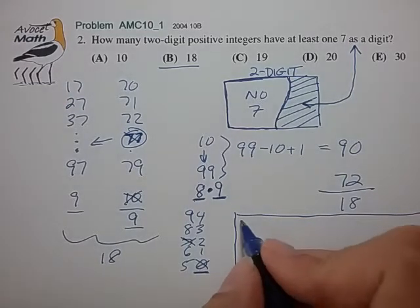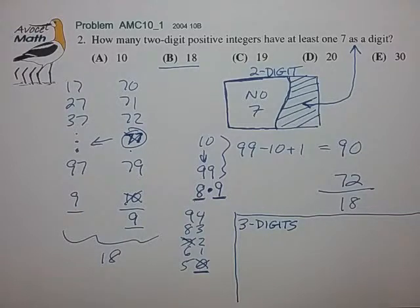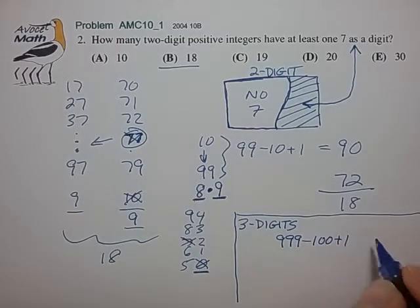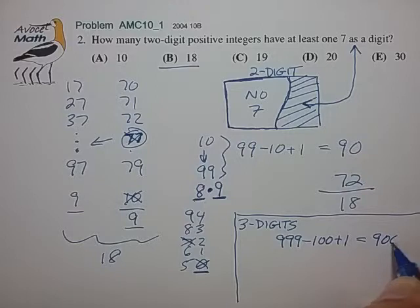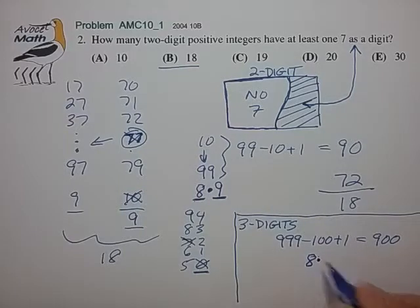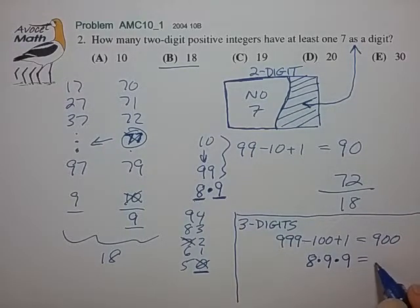So expanding this problem to three digits, we realize that the total number of three-digit numbers is given by a similar formula, 999 minus 100 plus 1, which is equal to 900, the total number of three-digit numbers. And the total number of three-digit numbers that contain no seven now is given by a similar formula. It's given by the choices for the hundreds digit, which is 8, times the number of choices for the tens digit, which is 9, times the number of choices for the units digit, which is 9, for a total of 648.